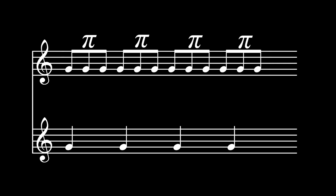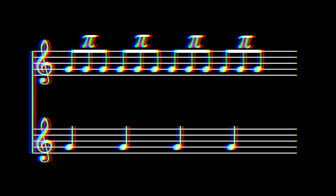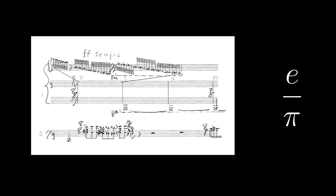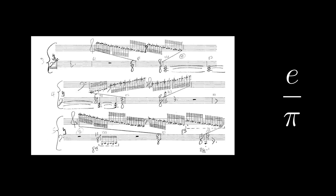Many composers have experimented with irrational and transcendental meters and subdivisions. Among the more well-known examples can be found Conlon Nancarrow's Studies for Player Piano. Study 40a uses the ratio of the transcendental constant E over Pi, yielding incredibly complex and unplayable textures.